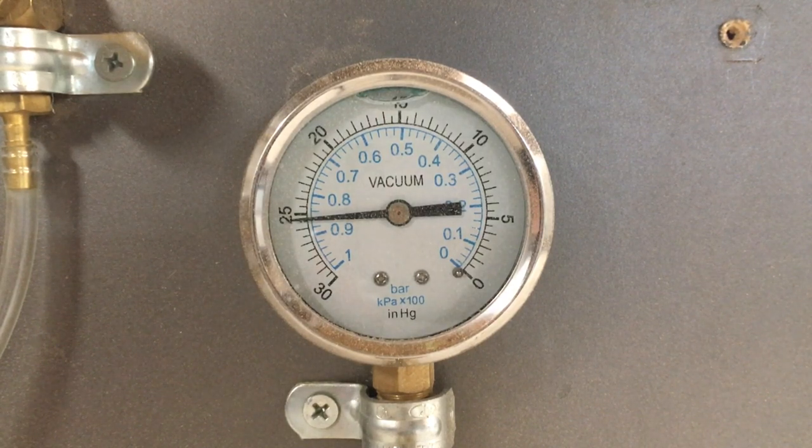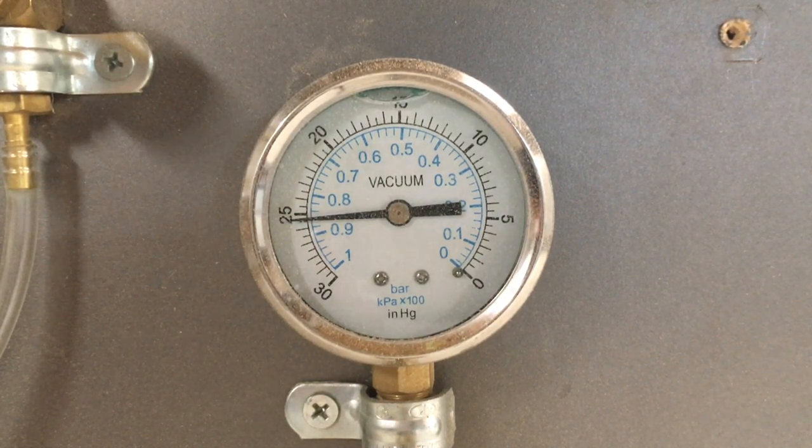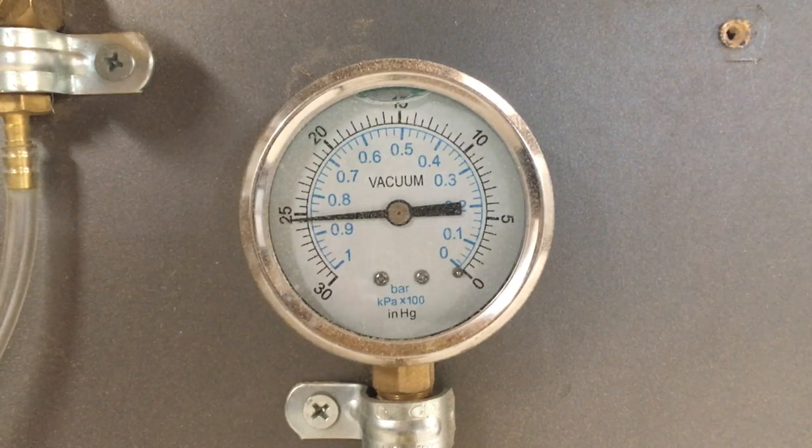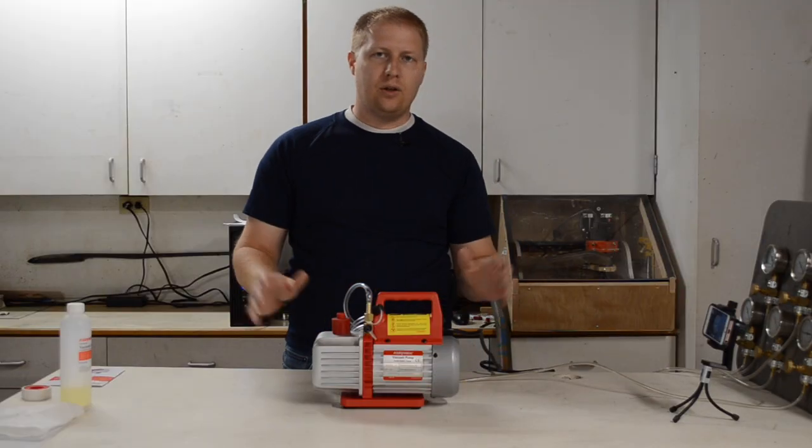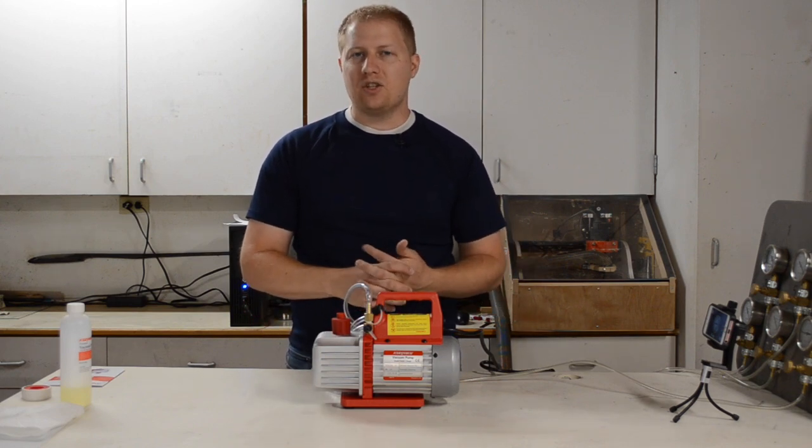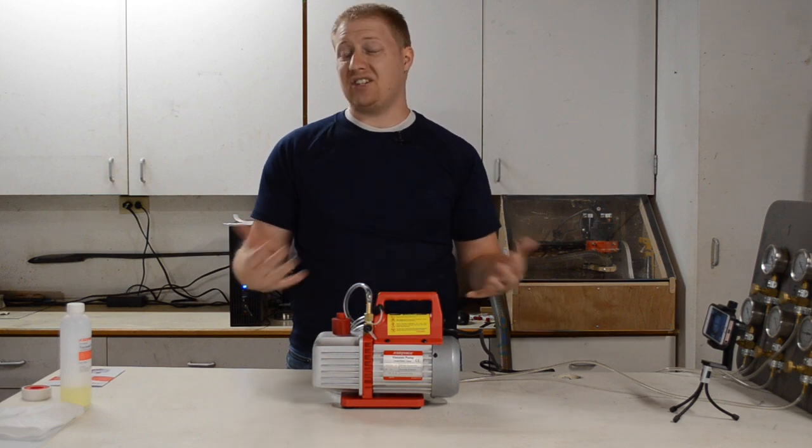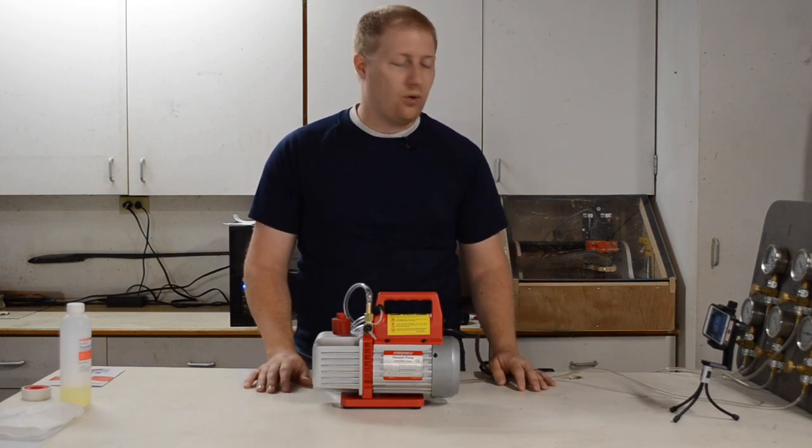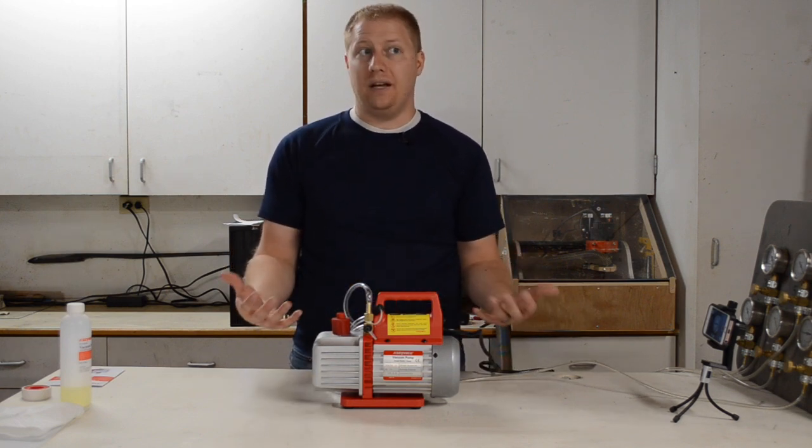It looks like we're getting right now just under 25 and a half inches of mercury, so maybe 25.4 inches mercury. So I looked it up and a perfect vacuum on my elevation is actually 26.3, so we're not getting quite a perfect vacuum but that's actually not bad. 25.4.